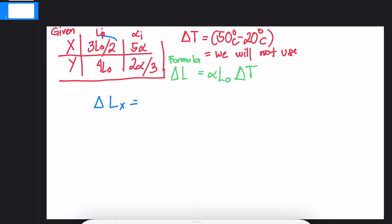So for X, we can substitute the values. We'll simplify it further. That would be 5 times 3, 15 over 2, alpha L delta T. This is our change in X. I want us to highlight this part.